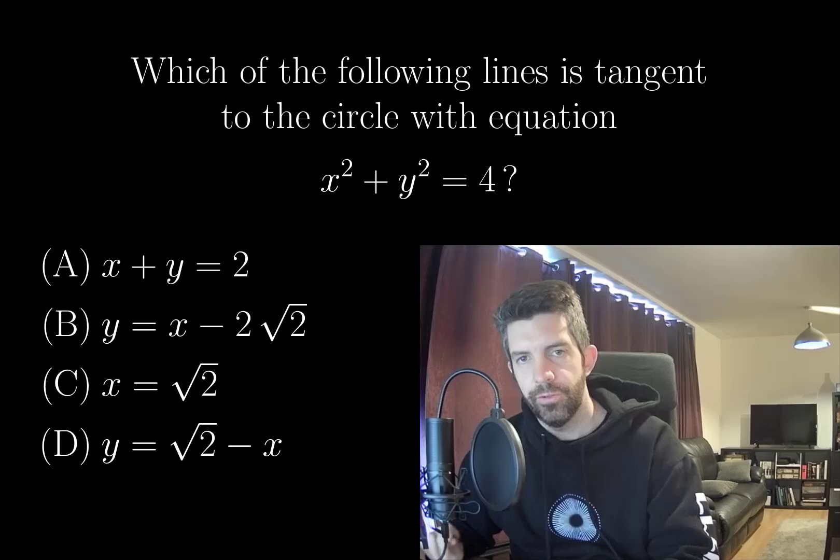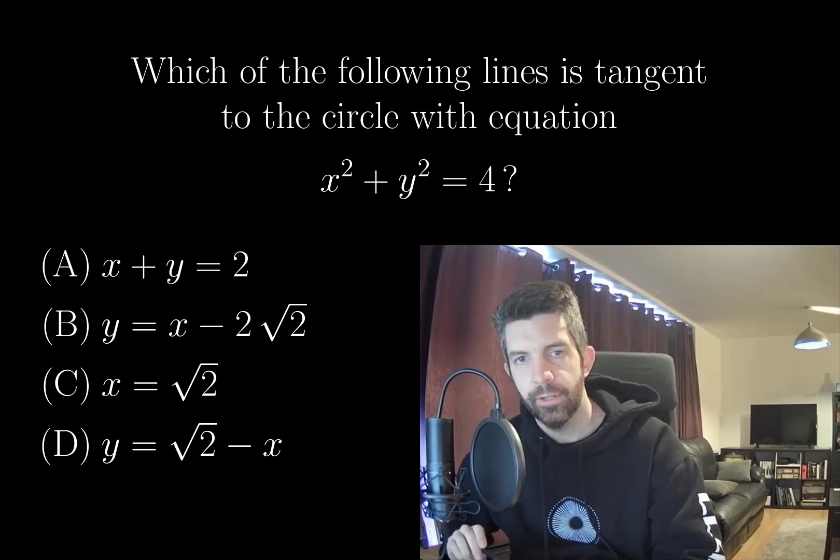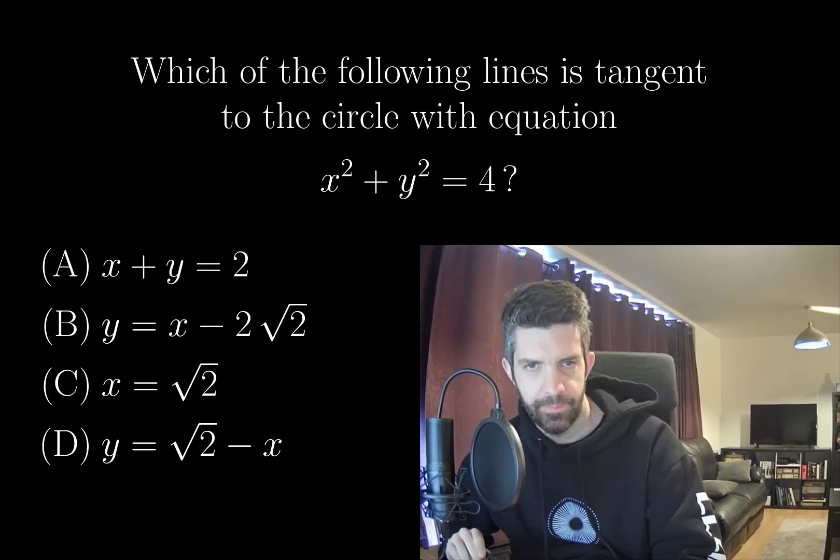Which of the following lines is tangent to the circle with equation x² + y² = 4? We're given four equations that represent straight lines. I think maybe the best way to figure this out is just by considering everything geometrically.